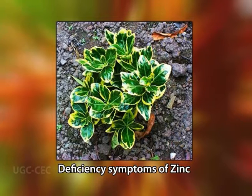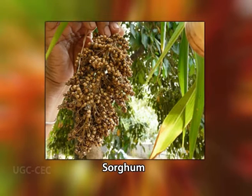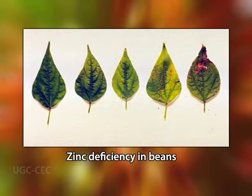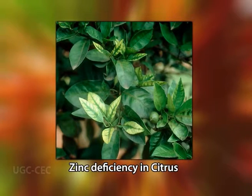In zinc deficiency, leaves form a circular cluster radiating at or close to the ground. Interveinal chlorosis occurs on younger leaves of corn, sorghum, and beans, followed by development of white necrotic spots. In vegetable crops, color changes appear in the younger leaves first; new leaves are usually abnormally small, mottled, and chlorotic. In citrus, irregular interveinal chlorosis occurs with small, pointed, mottled leaves, and fruit formation is significantly reduced. In legumes, stunted growth with interveinal chlorosis appears on the older lower leaves.